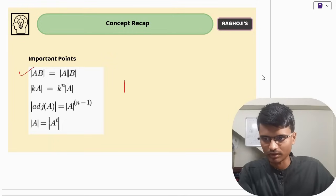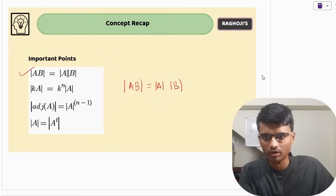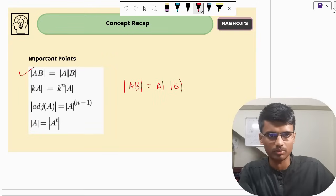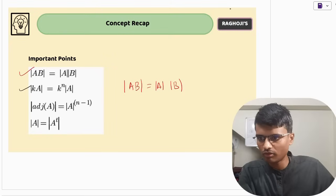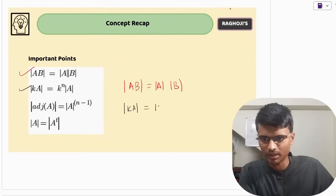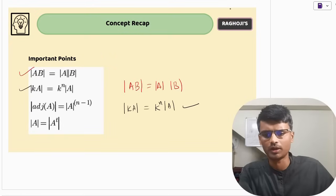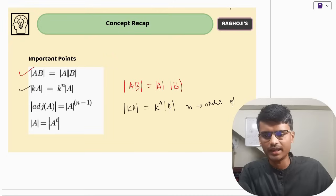Property one: determinant of AB equals determinant of A times determinant of B. Property two: determinant of KA, where K is some number, equals K to the power n times determinant of A. Here n is the order of the matrix — this is an important one.